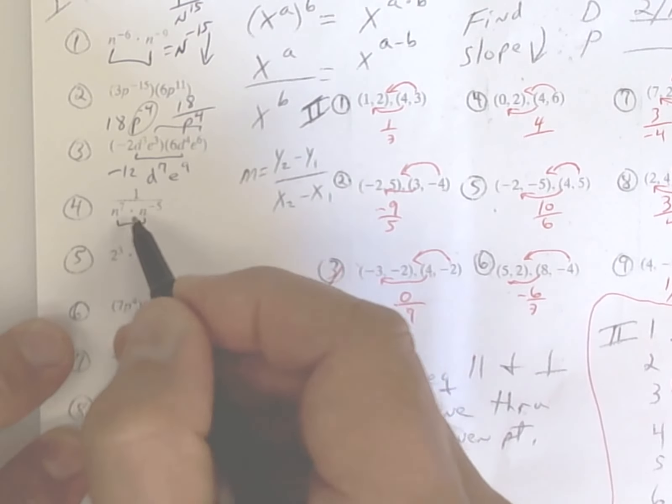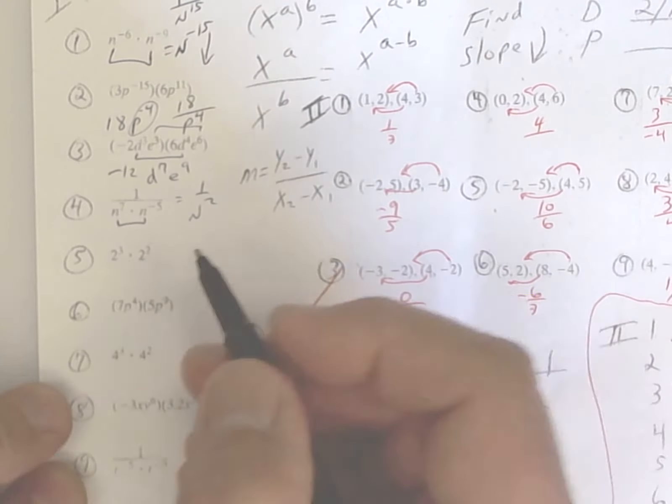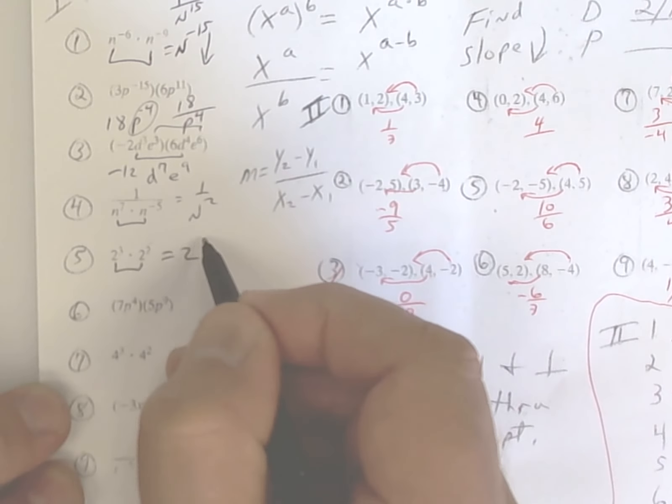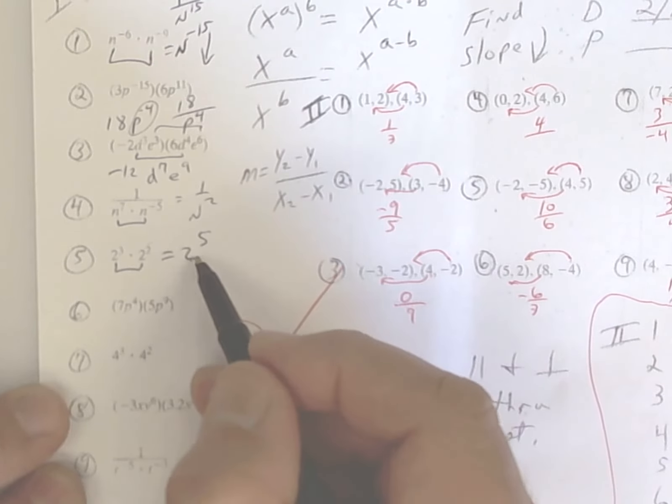This one, you're going to add these exponents up and get 1 over n to the second power. You've got the same base, so you add the top numbers. 2 and 3 makes 5. It's 2 to the fifth power. Do not multiply the bases. Keep the same base.